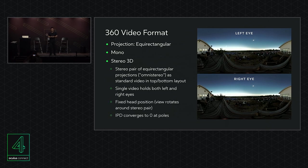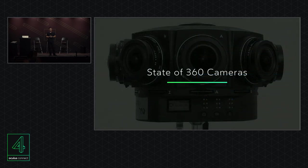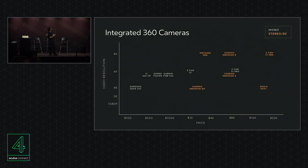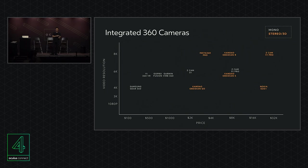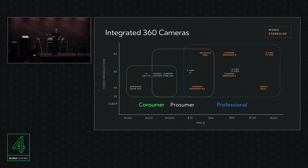Let's talk about the state of 360 cameras. This is a plot of currently available integrated 360 cameras that shoot at 4K or greater in resolution. Along the x-axis, price increases to the right. On the y-axis, we have output resolution. Stereo cameras are shown in orange. I've also done a rough classification of consumer, prosumer, and professional cameras — this is always hard to do because in practice people use whatever camera works well for them, and consumer cameras are frequently used in professional productions.